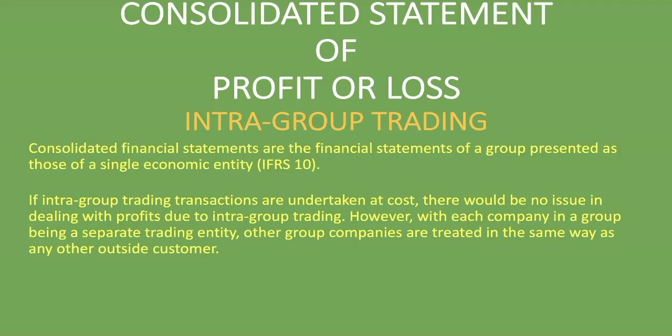Sometimes we have intragroup trading within companies in a group — for example, a parent company with five subsidiaries, all forming part of the group. If they trade with one another at cost, with no markup on products, there would be no issues — it would be straightforward. However, each company in the group is a separate entity and trades with everyone else, even those within the group, as if they are outside customers, and that is where issues with intragroup trading arise.